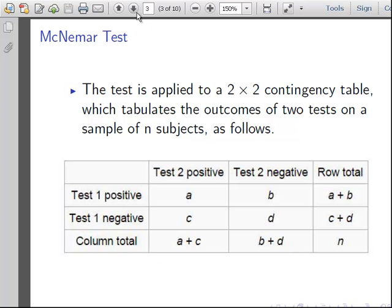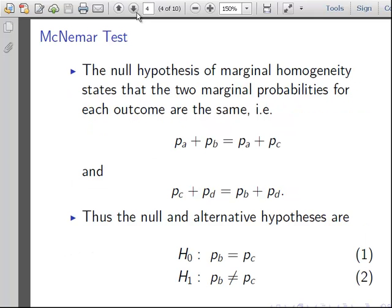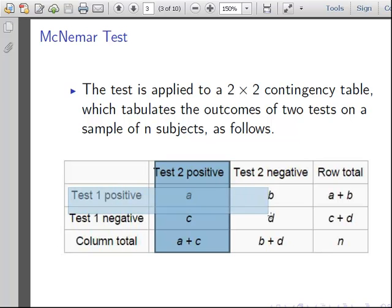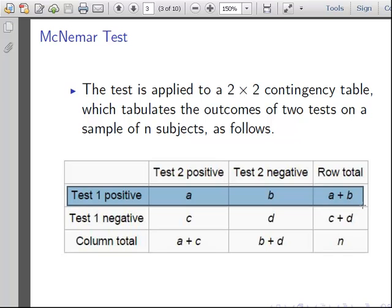The null hypothesis of marginal homogeneity states that the two marginal probabilities for each outcome are the same. So PA plus PB equals PA plus PC. So what does that mean? Essentially P is just a proportion, so it's just these numbers divided by N. The test 2 positive, that's A plus C, is equal to the test 1 positive, A plus B. So the positive rate for test 1 positive is equal to the positive rate for test 2. A plus B equals A plus C. So everything that's highlighted there, the marginal probabilities. We can look at it from the point of view of the negative, but we won't do that. We just like to keep it in terms of the positive.